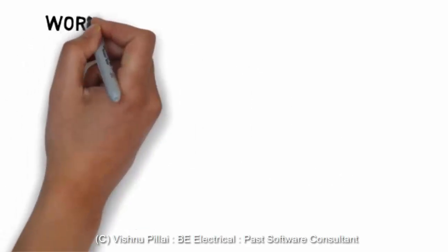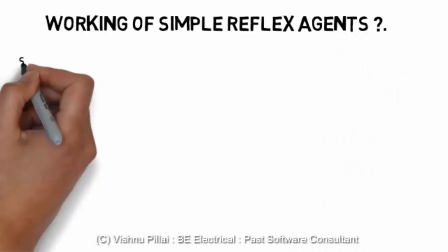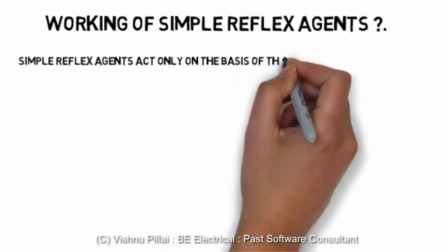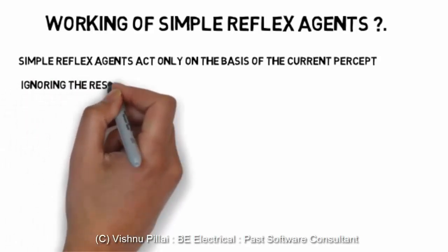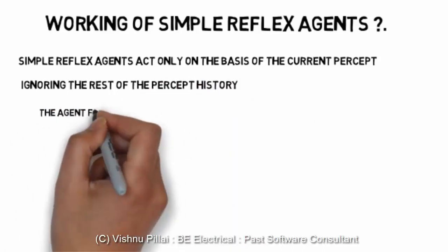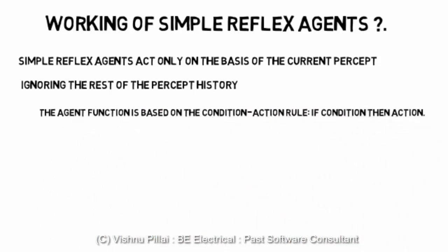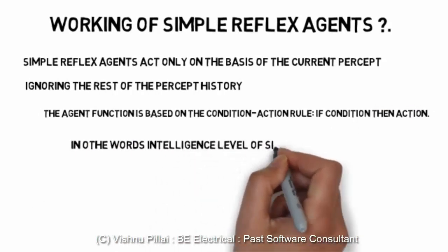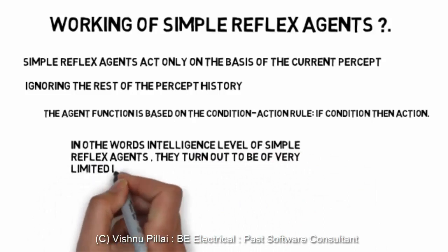A simple reflex agent acts only on the basis of its current percept — that is, what has been perceived through the sensors. It will ignore the rest of the percept history. Even if the agent has been working on a task for a month or a year, it will not store what it has learned throughout that period. The agent functions based on the condition-action rule: if condition, then action.